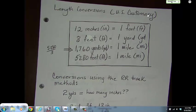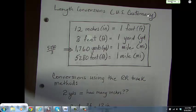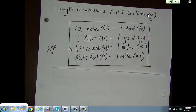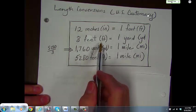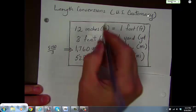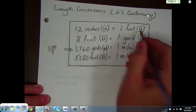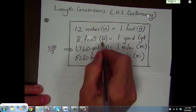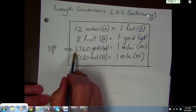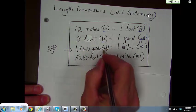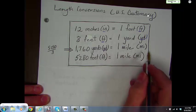Now, when it comes to conversions in length, there are some things that we do have to know. This is stuff you need to have in your notes. Length conversions, U.S. customary measure: 12 inches equals 1 foot. 3 feet equals 1 yard. 1,760 yards equals 1 mile.